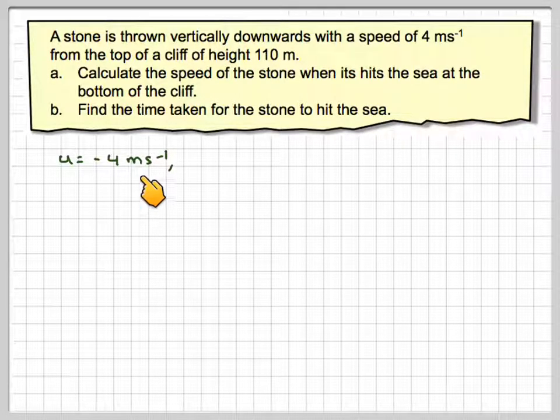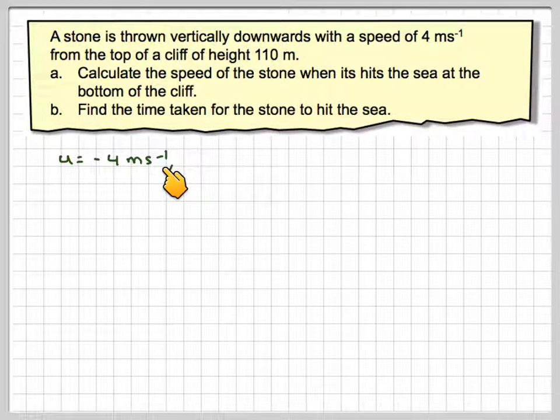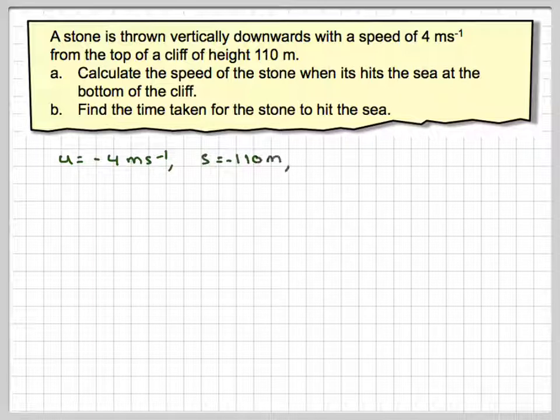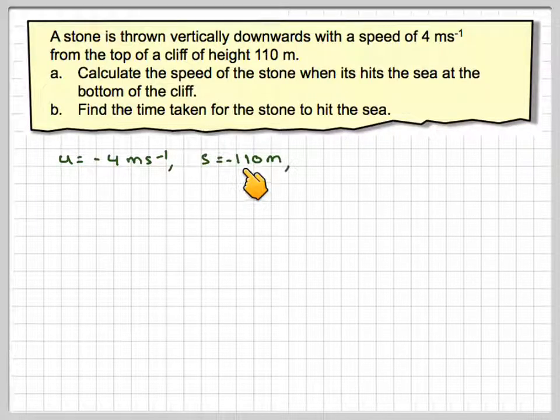So we've got that u is -4 metres per second. I'm going to take downwards as negative and upwards as positive. S is therefore minus, because S is displacement and the distance, minus 110 metres.